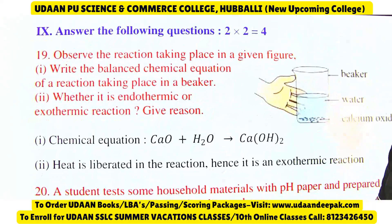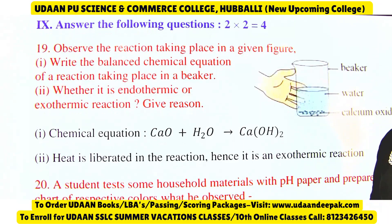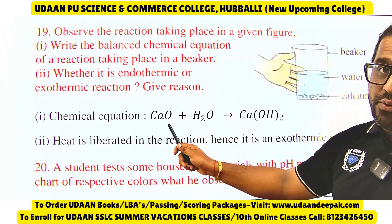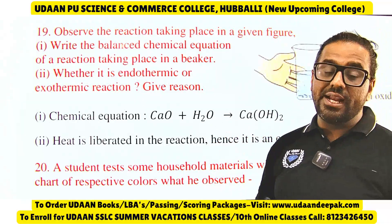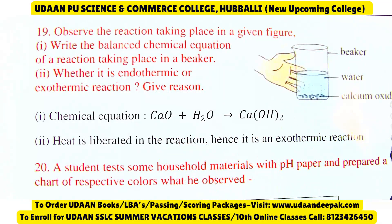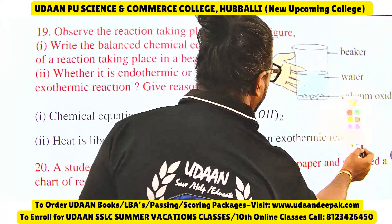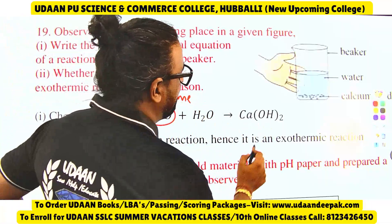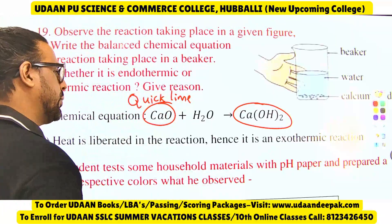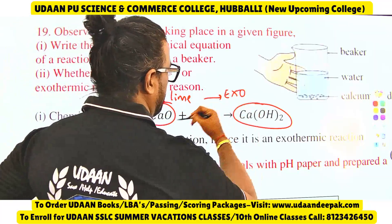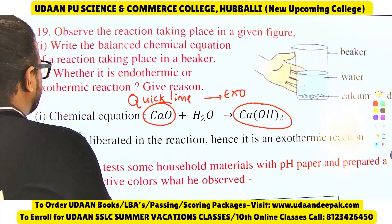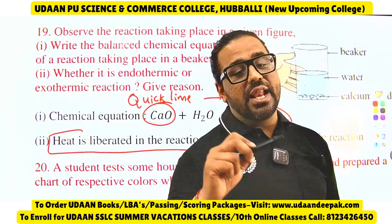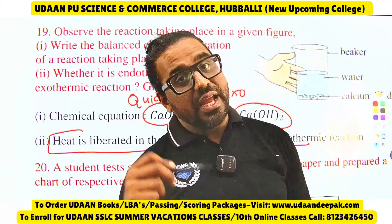Observe the reaction taking place: calcium oxide when added to water — CaO plus water gives calcium hydroxide. Calcium oxide is quicklime and when added to water it forms calcium hydroxide. This is an exothermic reaction because heat is liberated, and you know that all combination reactions are exothermic.